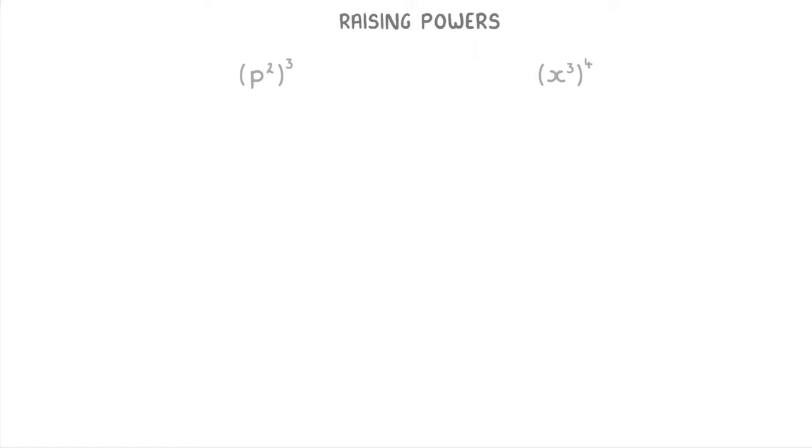As a recap, remember that powers just tell you how many of a particular term you need to multiply together. So this 3 here tells us that we need to multiply 3 of these p squared terms together: p squared times p squared times p squared. The p squared itself means that we have to multiply 2 p's together, so p times p.